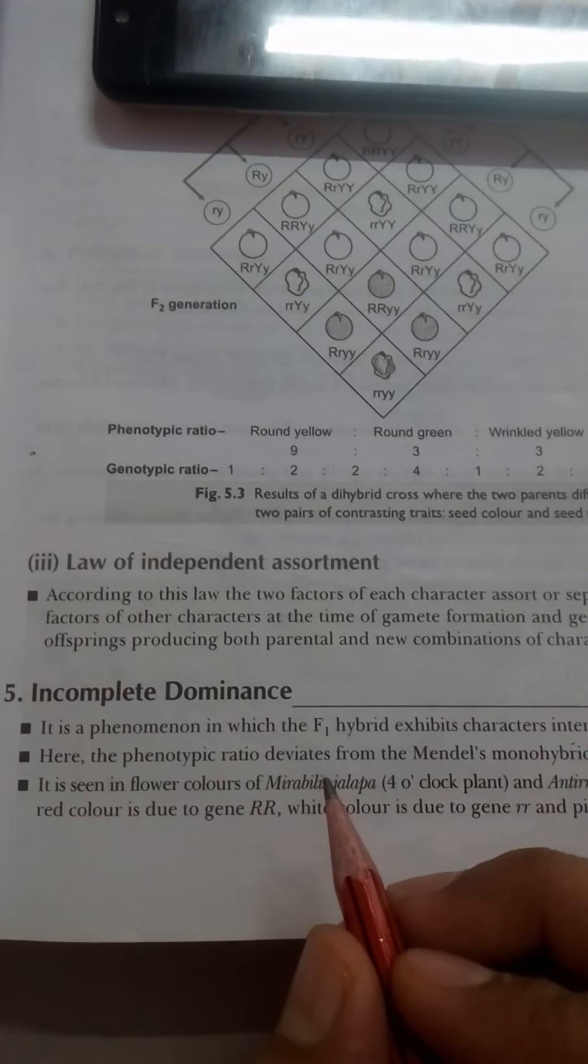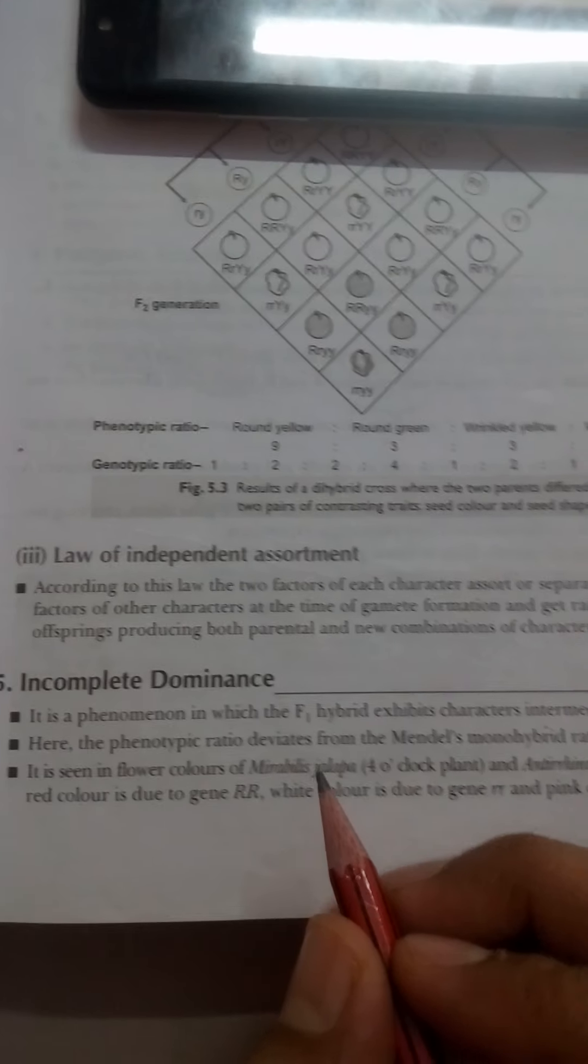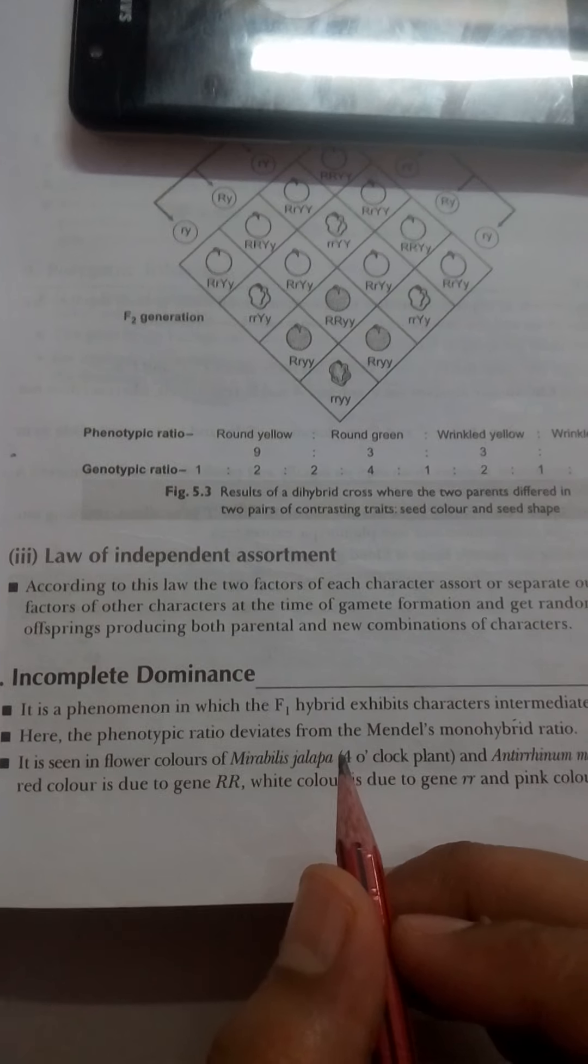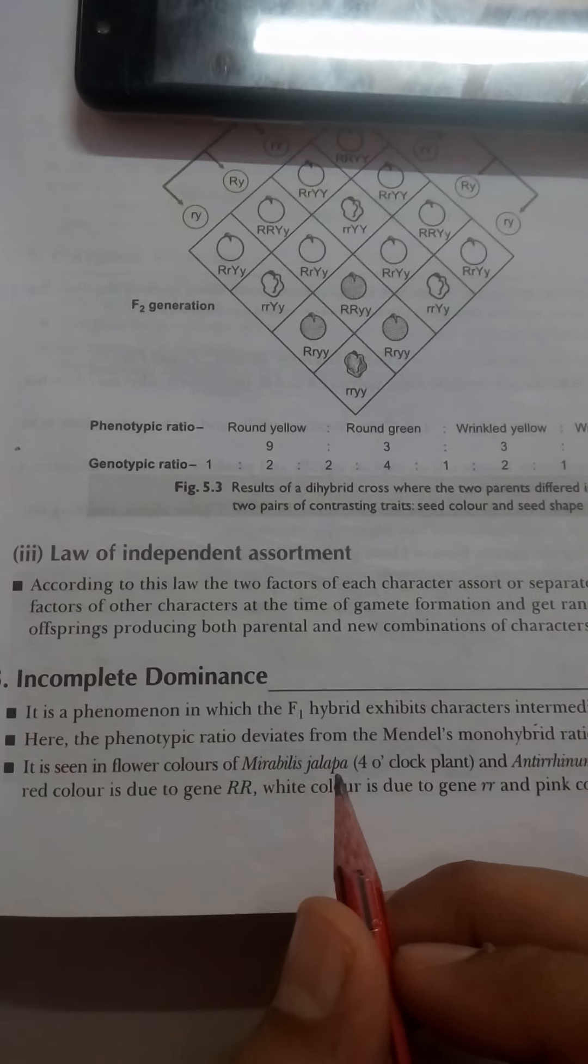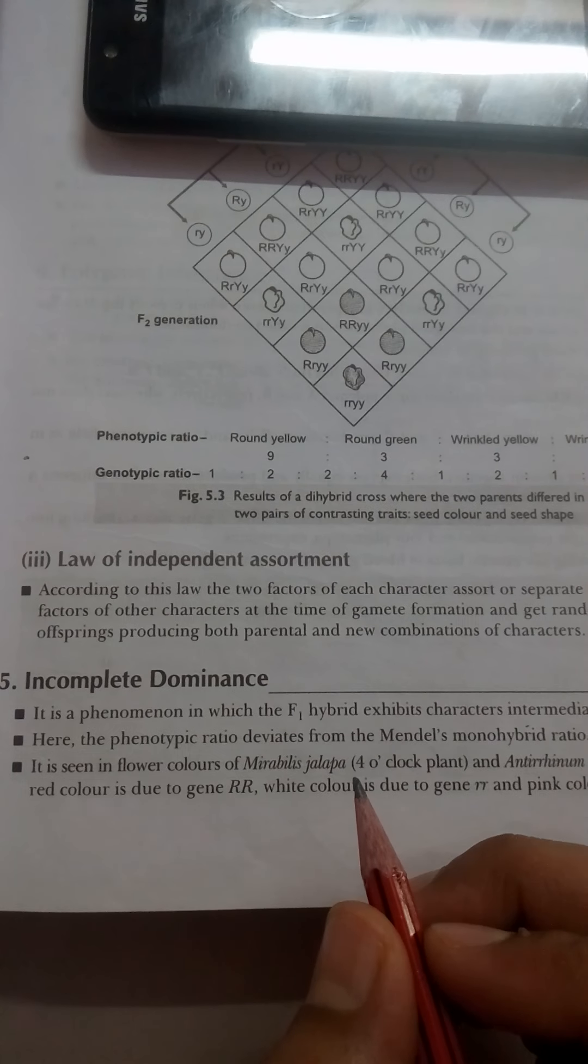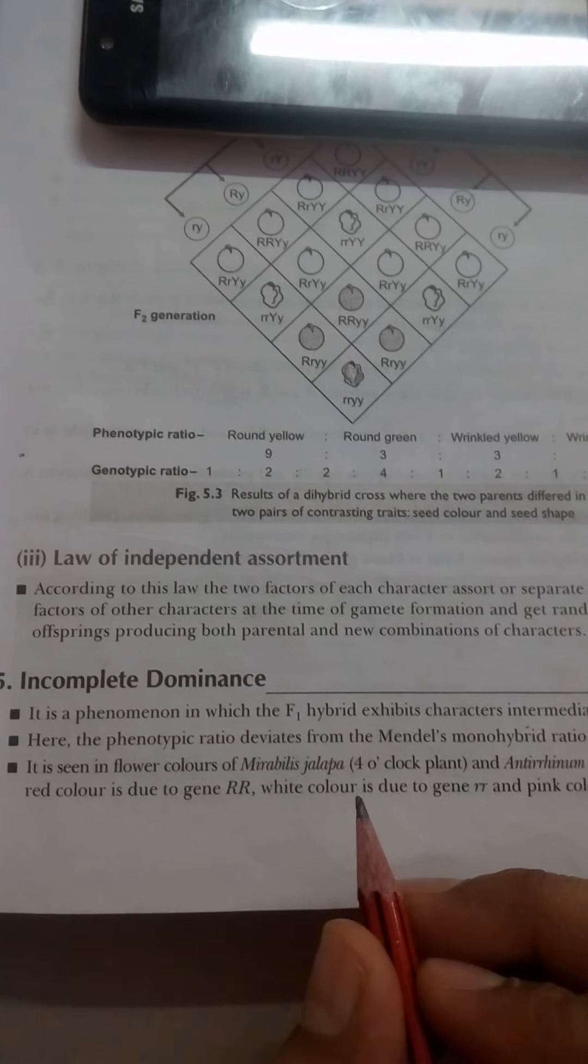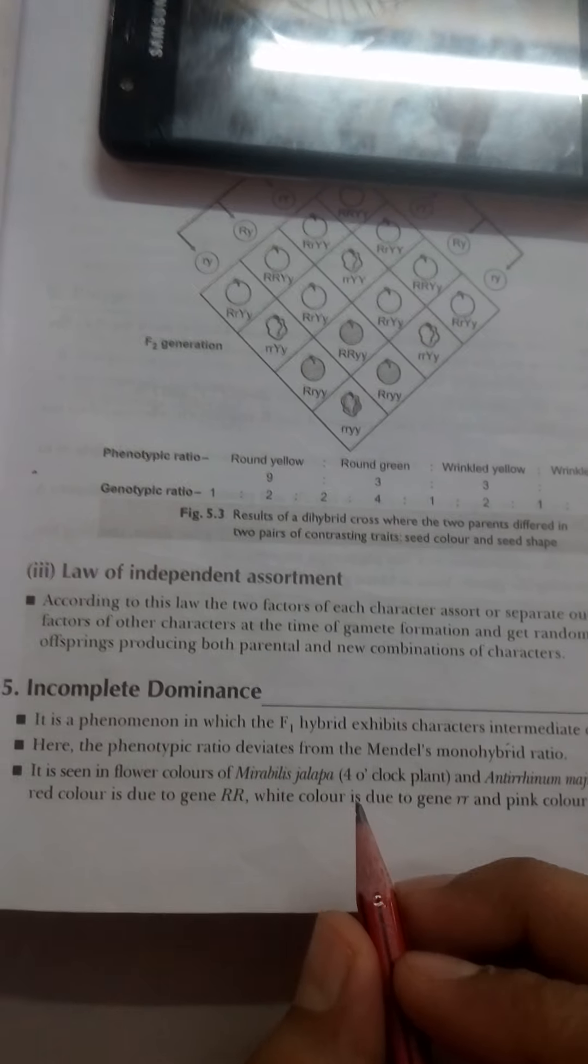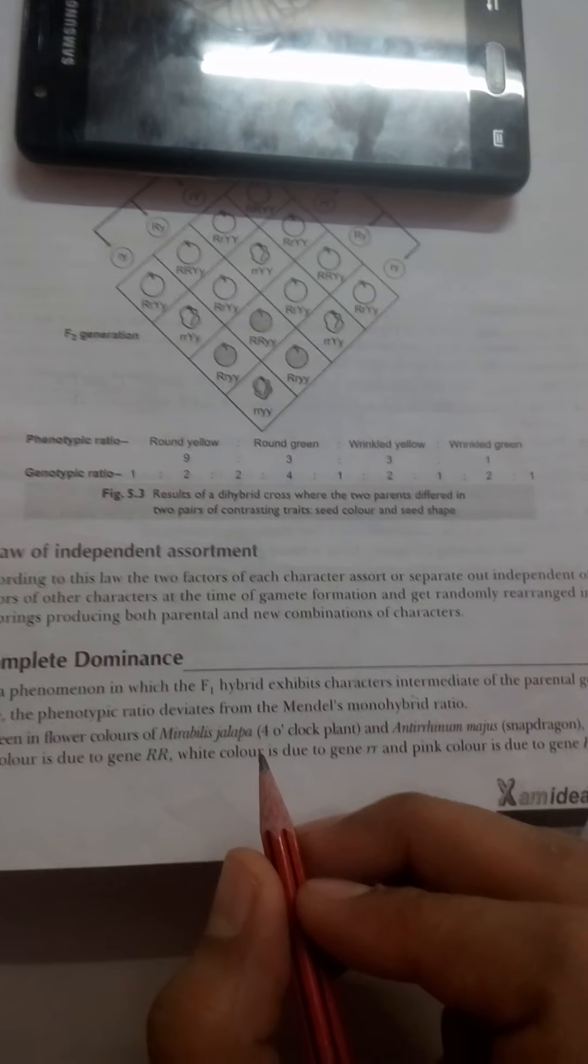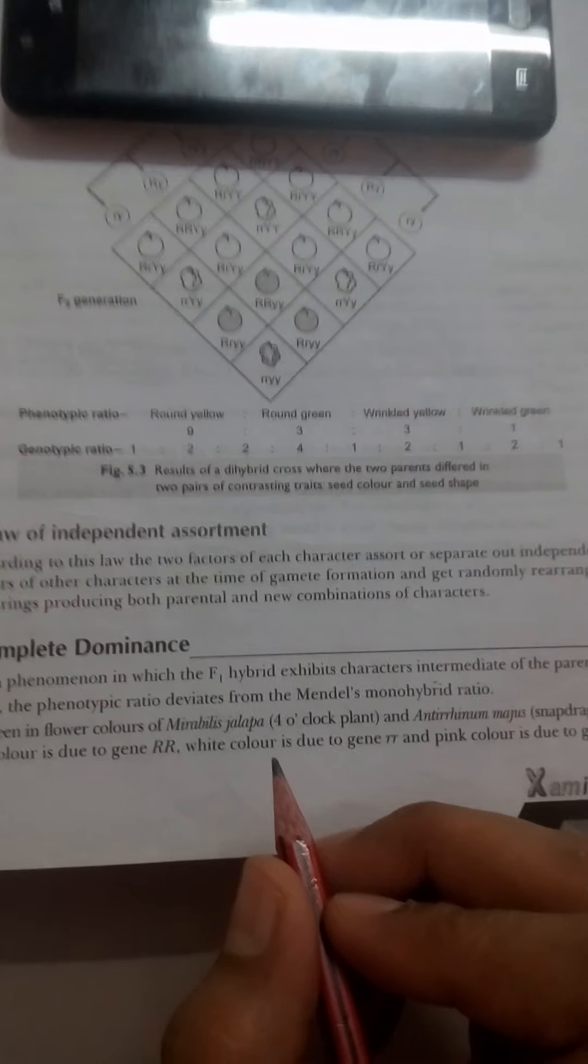You have also learned about Mendel's Law of Dominance. Here you can see incomplete dominance. This means that out of both parental traits, none of one expresses completely. Here you will find that an intermediate of the parental traits appears in the F1 generation.